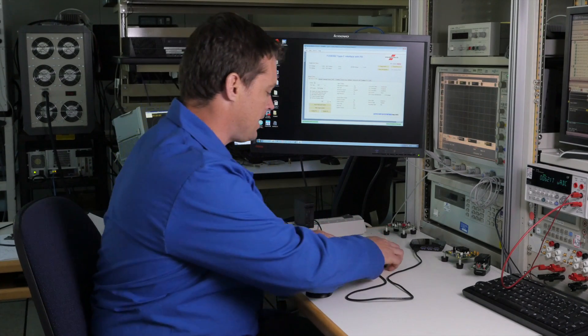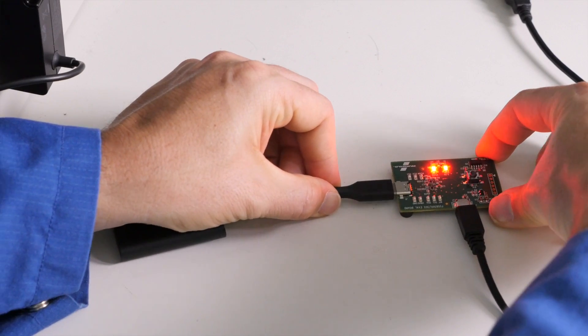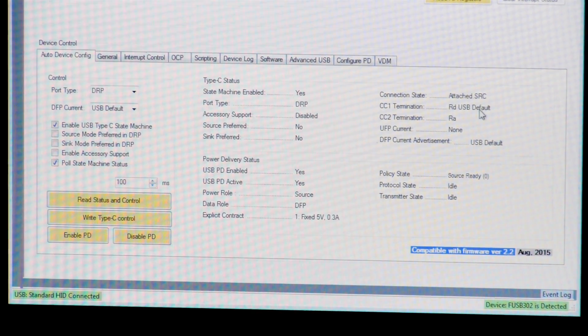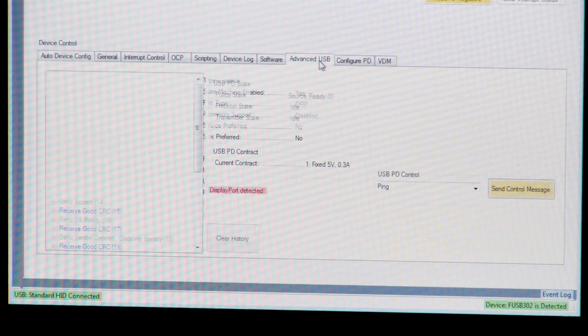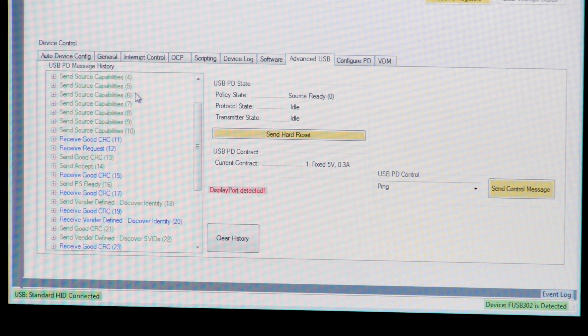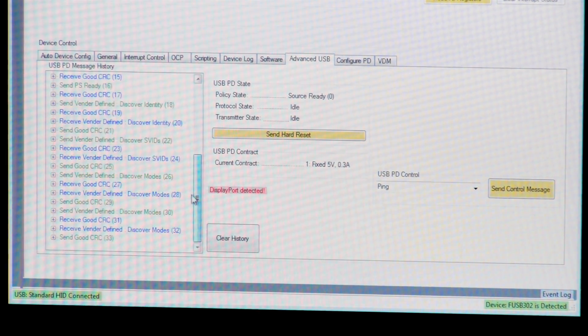If I connect the HDMI dongle, the FUSB302 will report that it is attached as the source and communicating on the CC1 channel. We are also in a 5-volt contract, but there's more that's happened. In addition to the power contract that we saw with the charger, there are now new commands.